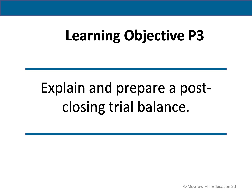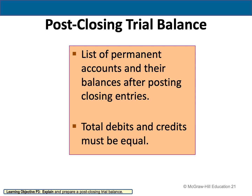The fourth learning objective is to explain and prepare a post-closing trial balance. After all four closing entries are made, we prepare a post-closing trial balance — a list of permanent accounts and their balances after all closing entries have been journalized and posted. It verifies that total debits equal total credits for permanent accounts and that all temporary accounts have zero balances.